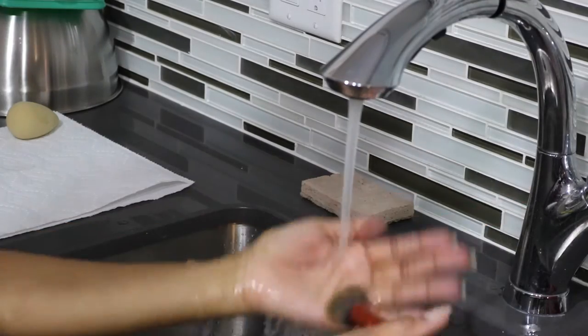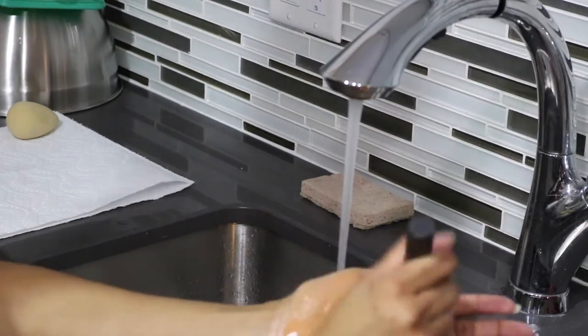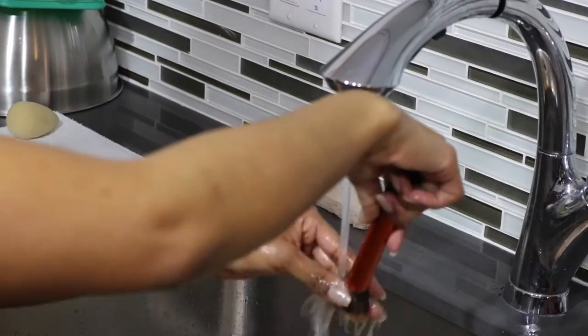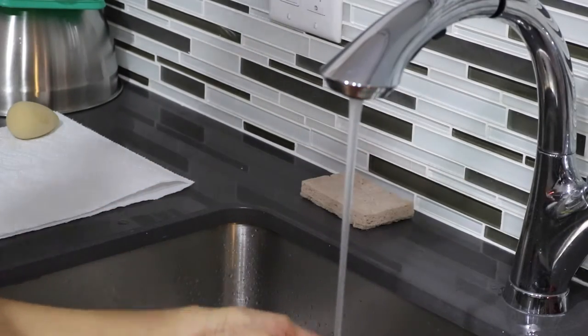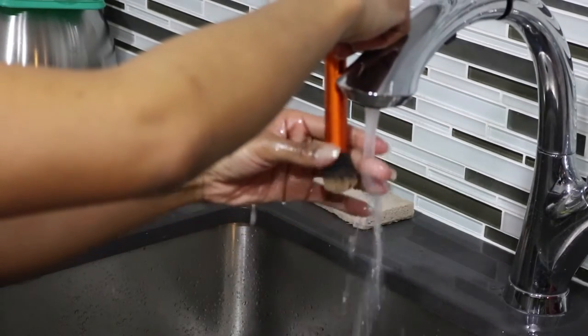As you're doing this, rinse in between. When you're rinsing the brush, make sure the brush is facing downward because you don't want any of the makeup to seep back into the brush. You want it to fall out toward the sink, so just be mindful of that.